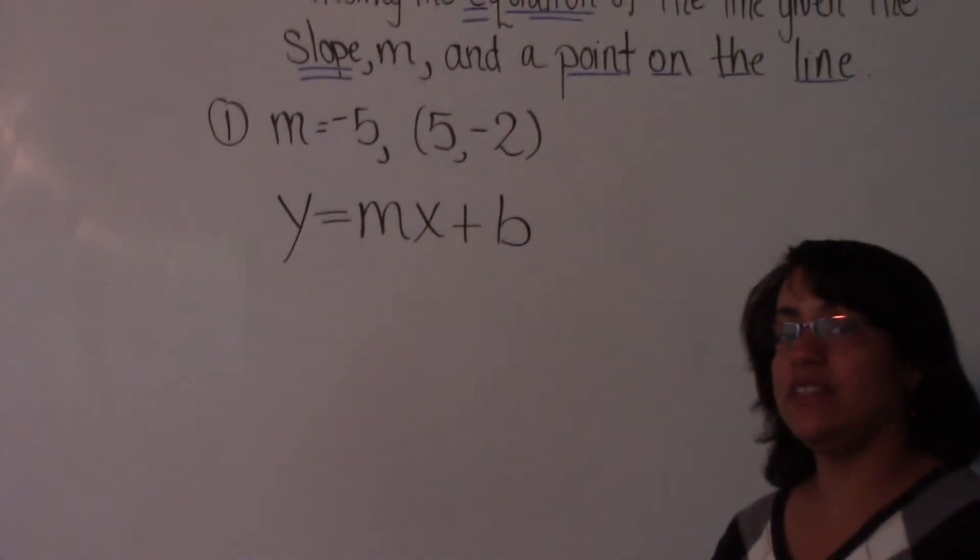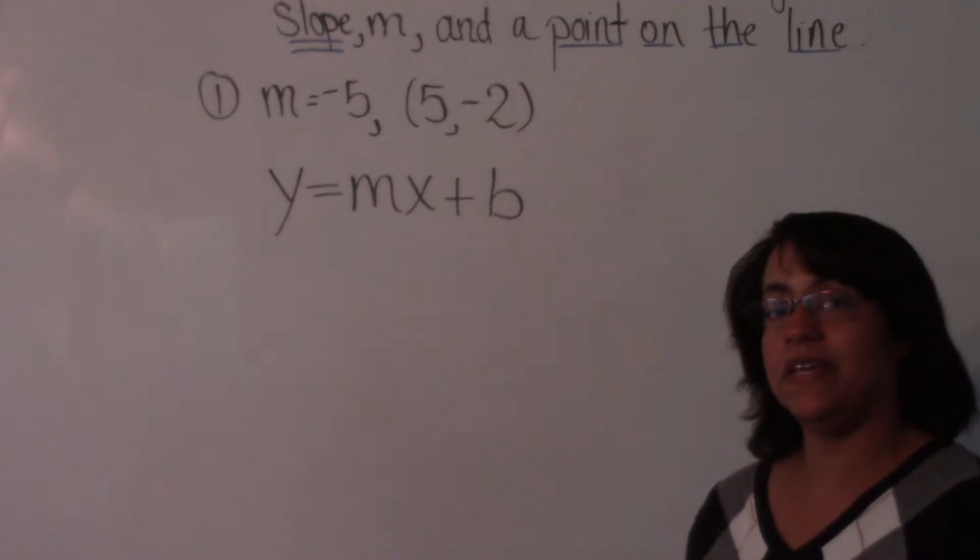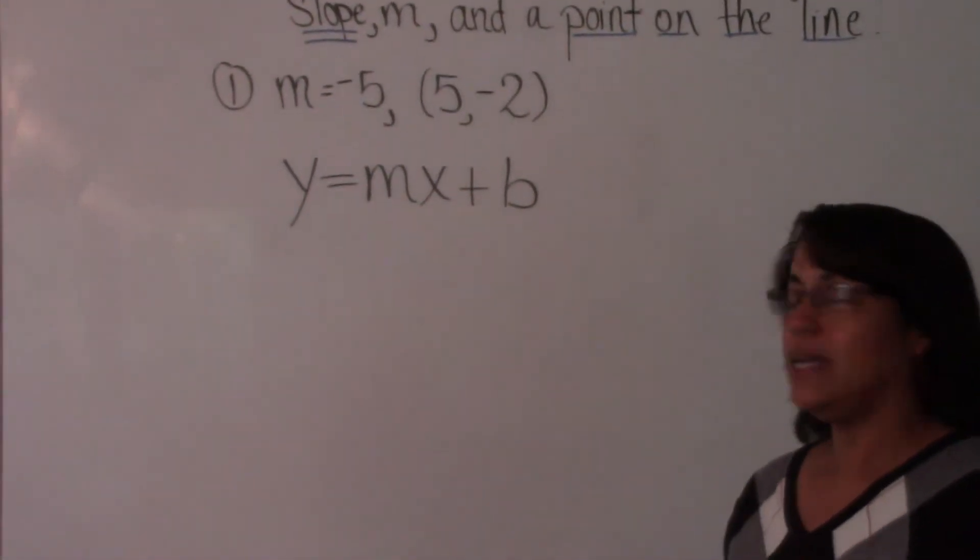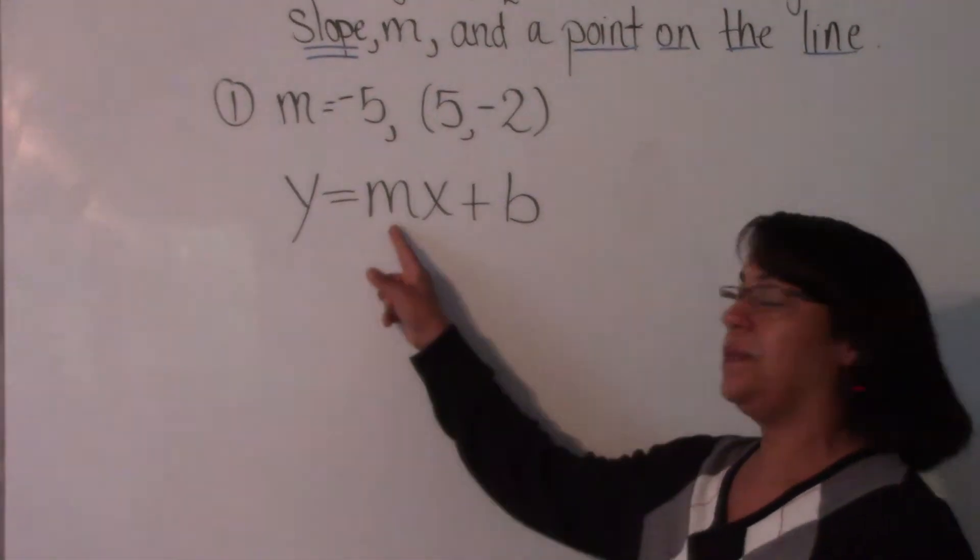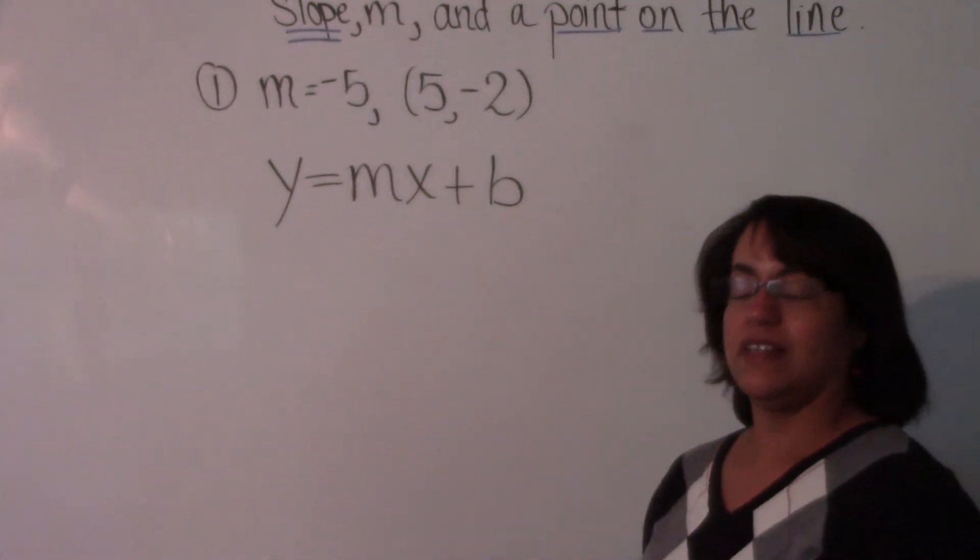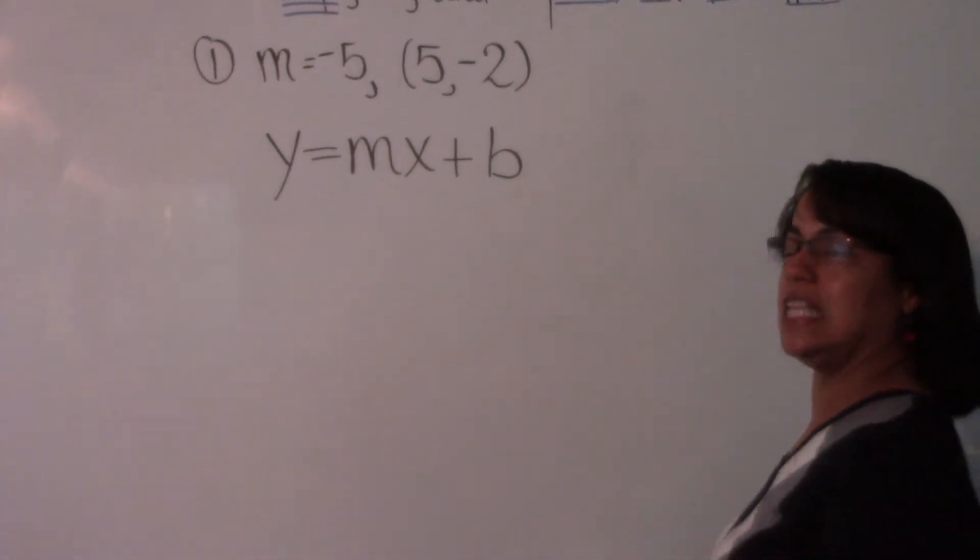Well, we know everything here but b, so we can use our m and our x and y to find b, and then we can write our equation by plugging in for m and b at the end. I'll show you two examples and then I'll let you practice.